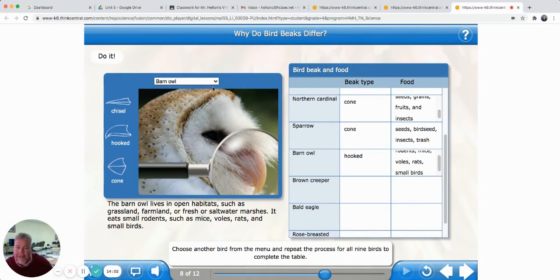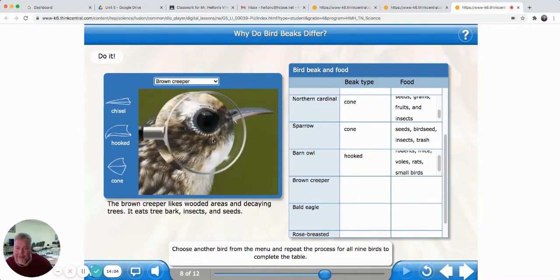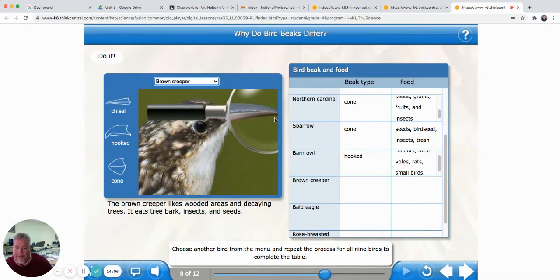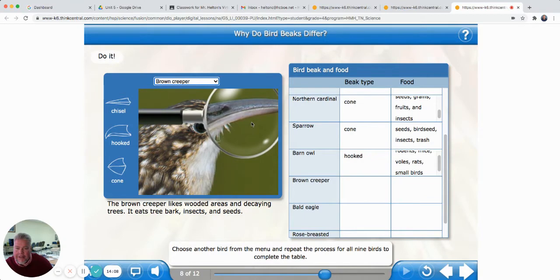Let's go to the next one. A brown creeper. That sounds a little scary. Brown creeper. There he is. He's got that long chisel type bill. Brown creeper likes wooded areas and decaying trees. It eats tree bark and insects and seeds.